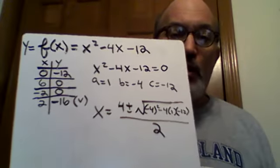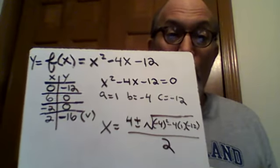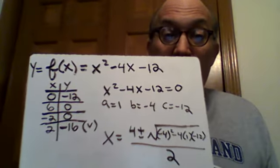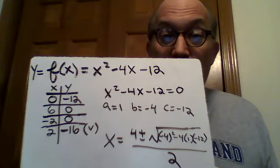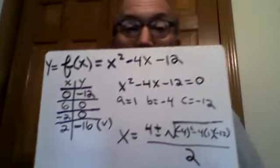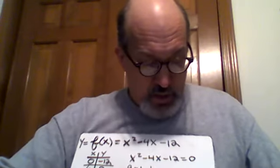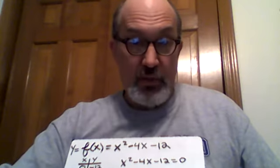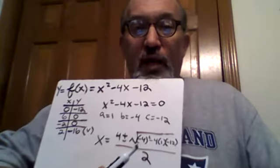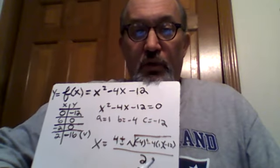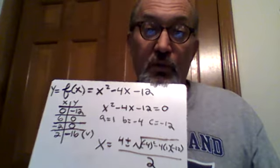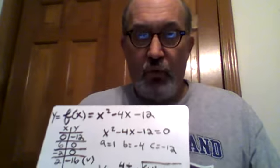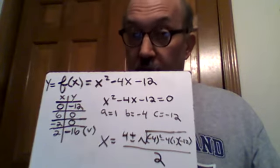The hardest part about using the quadratic formula is to do the rational number operations or the integer operations that are necessary inside the square root sign, the b squared minus 4 times a times c. Well any number squared is positive so negative 4 squared is 16, and then you've got negative 4 times 1 times negative 12. You've got two negative numbers there. The one is positive but two negatives multiplied together so that second term is positive. We have 16 plus 48 and that's 64.